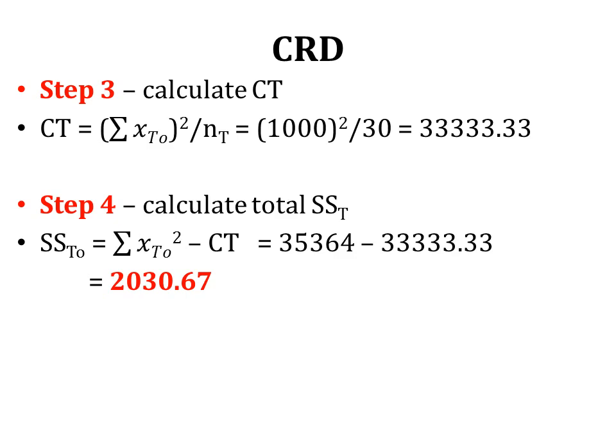Step three is to calculate the Correction Term (CT) for ANOVA: CT = (ΣX_total)² / N_total = (1000)² / 30 = 33,333.33. Step four is to calculate the Total Sum of Squares: SS_Total = ΣX²_total − CT = 35,364 − 33,333.33 = 2030.67.